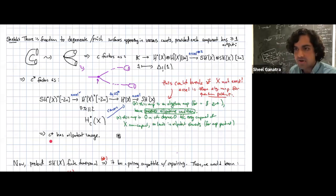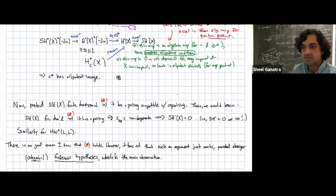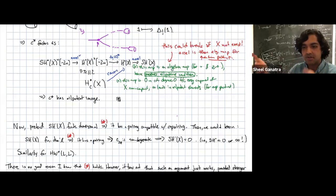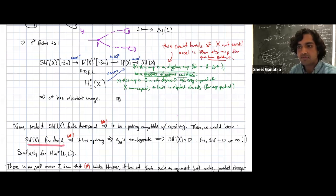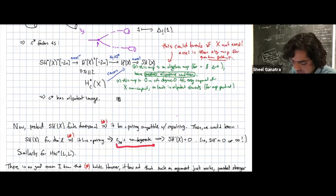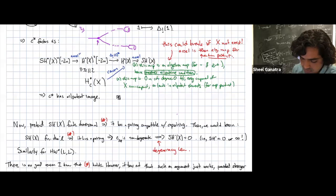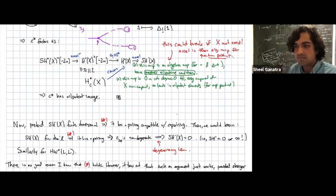Here's how I'd like to use the Degeneracy Lemma. Let's pretend we know that if symplectic cohomology is finite dimensional, then it has a pairing compatible with the co-pairing fitting into a snake relation. Well, if SH is finite dimensional, then by this hypothetical implication it has a pairing; then by the snake relation the co-pairing is non-degenerate; then by the Degeneracy Lemma that can only happen if symplectic cohomology is zero. So that would prove the zero-or-infinity alternative. A similar argument works for wrapped Floer cohomology.